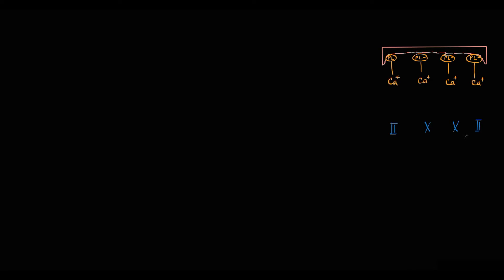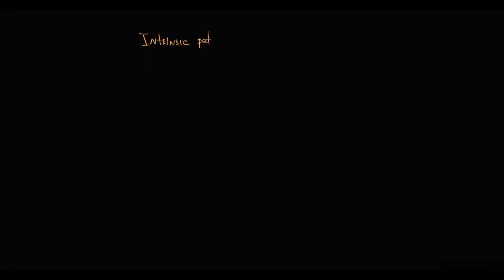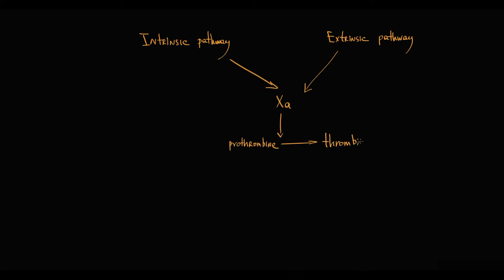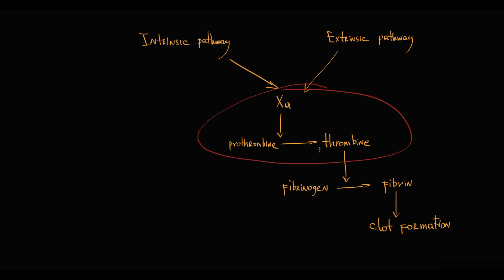But how are coagulation factors able to bind? Recall that we have the intrinsic coagulation pathway and the extrinsic pathway. They both result in activation of factor 10, which converts prothrombin into thrombin. Thrombin then converts fibrinogen into fibrin, which finally results in clot formation.